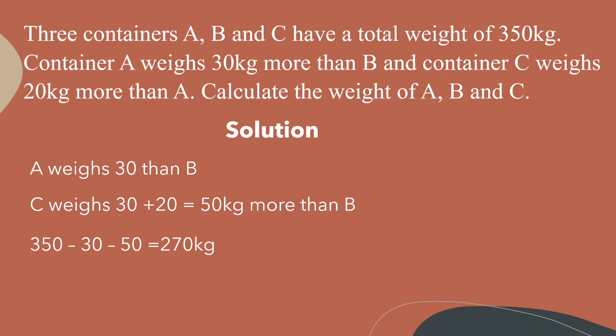Having removed the excess we would recognize that we have a total weight of 270 kilograms to be equally distributed among containers A, B, and C. Thus, each of the containers would have a base weight of 270 divided by 3 which is equal to 90 kilograms.